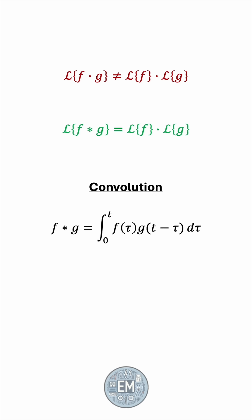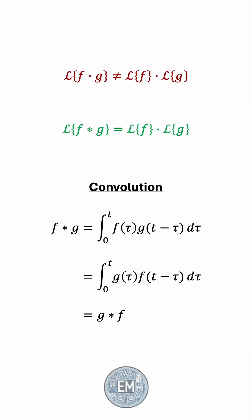It should be noted that the functions f and g we're considering here are only of interest in the interval 0 to infinity, which is pretty much always the case when t actually means time. Also, it can easily be proven that g and f are interchangeable in this integral — in other words, the convolution operation is commutative.